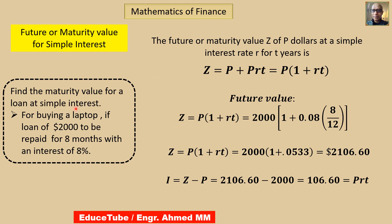Here is an example to find the maturity value. A loan of $2000 must be repaid in 8 months with 8% interest. So we use 2000 times 0.08 times 8/12, since 8 months must be converted to years. Using a calculator we can find Z, and if we subtract the principal value of 2000 from Z, we get the interest.